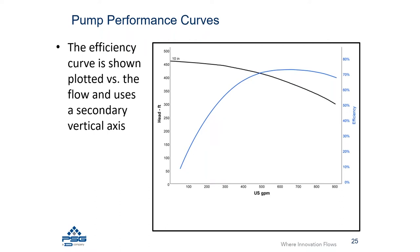For all centrifugal pumps, at very low flow rates the pump is very inefficient. As you move to the right of the curve, efficiency increases quite quickly until it hits a peak. That peak is called the best efficiency point, or BEP, which is the ideal operating condition for a centrifugal pump to achieve the most efficiency and best reliability.